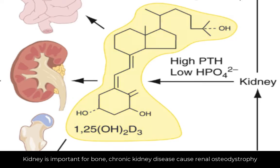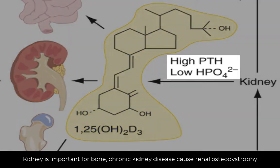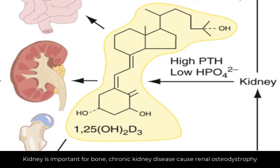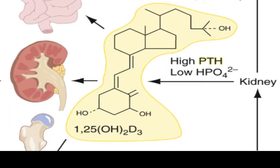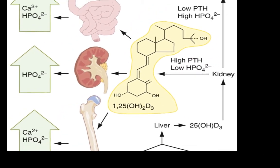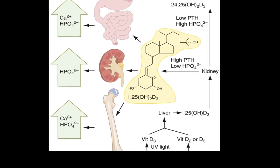Activation of vitamin D in the kidney is regulated by parathyroid hormone and phosphate level. Parathyroid hormone causes more activation of vitamin D, and low phosphate level results in more activation. We can anticipate then that vitamin D has an effect in increasing phosphate level.